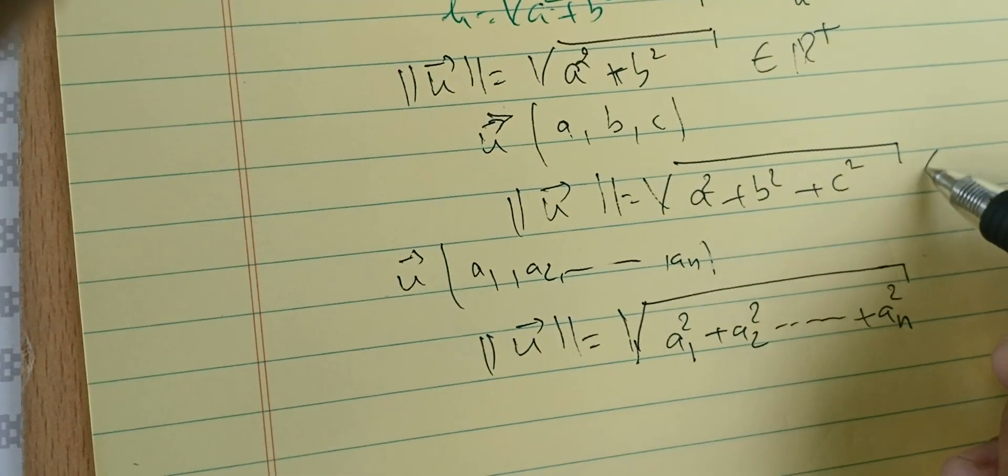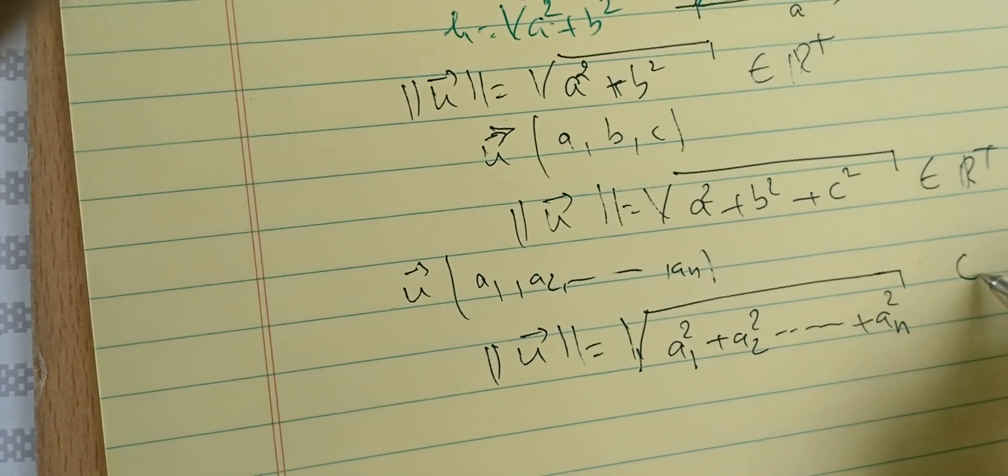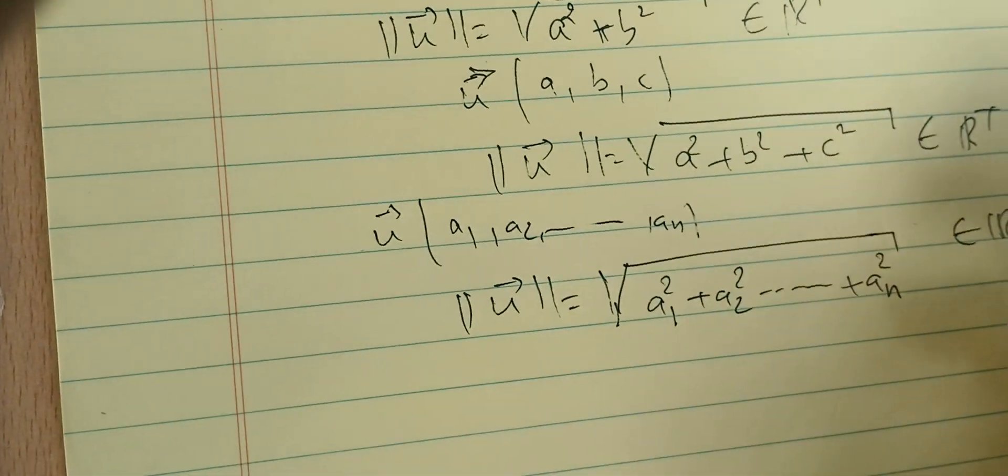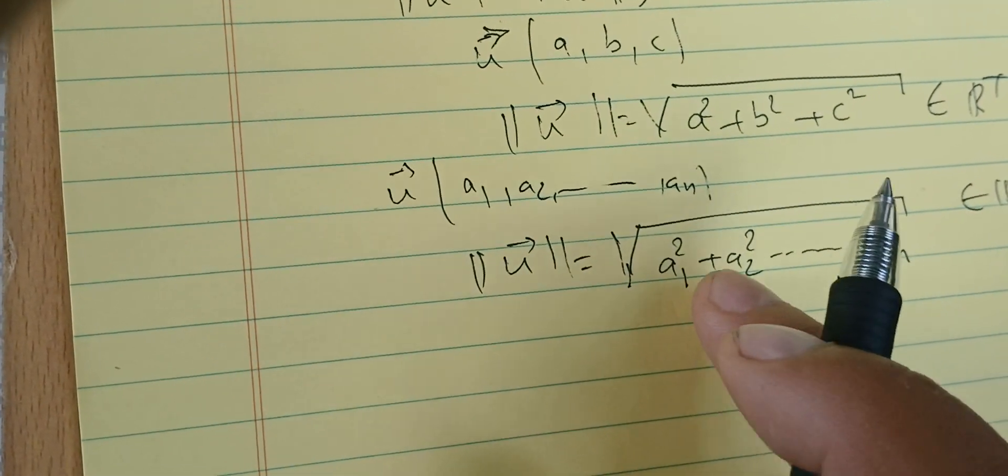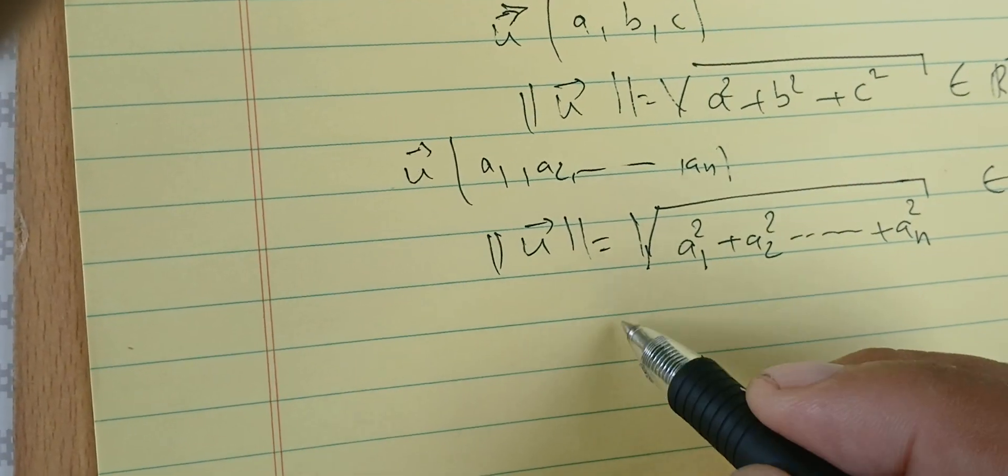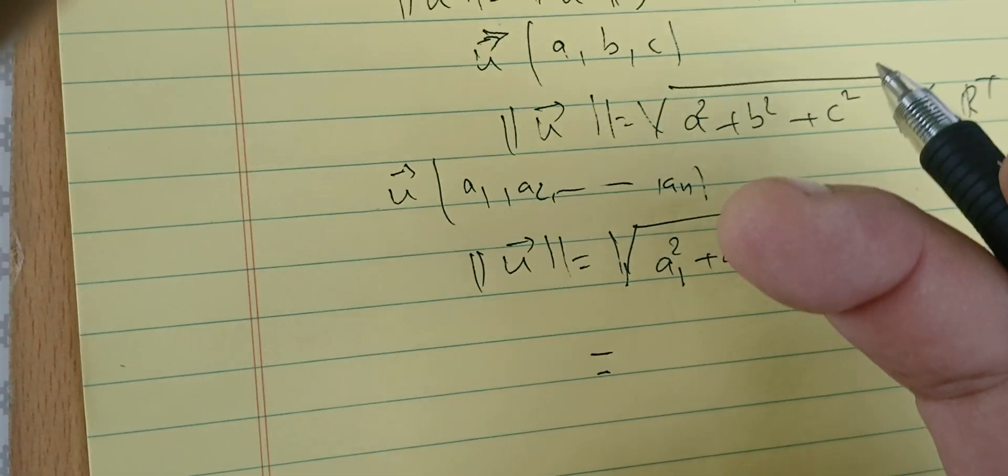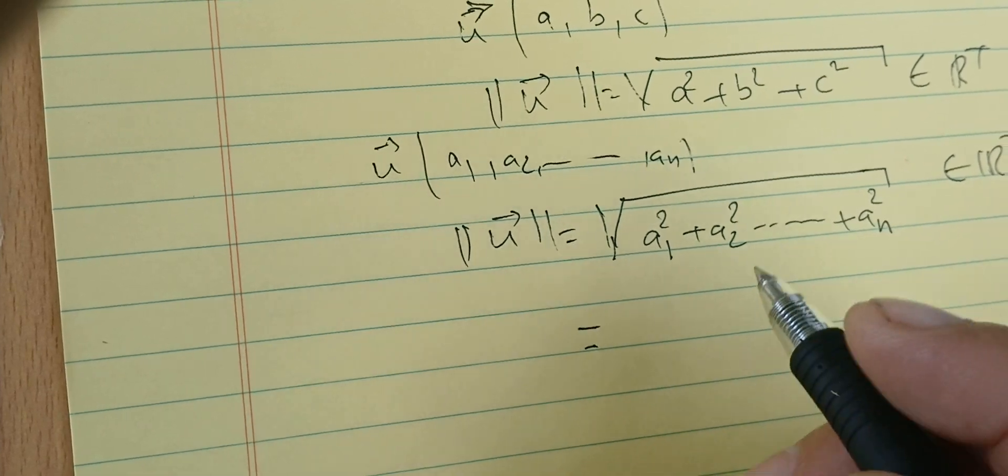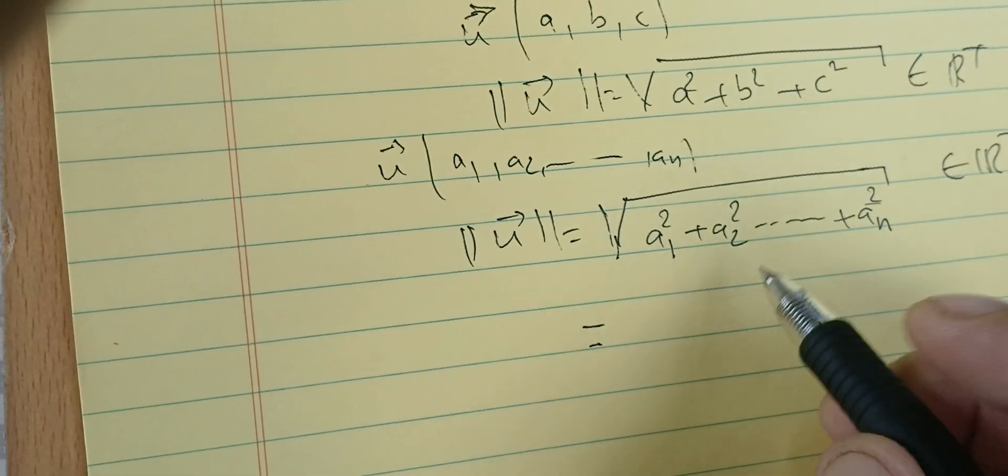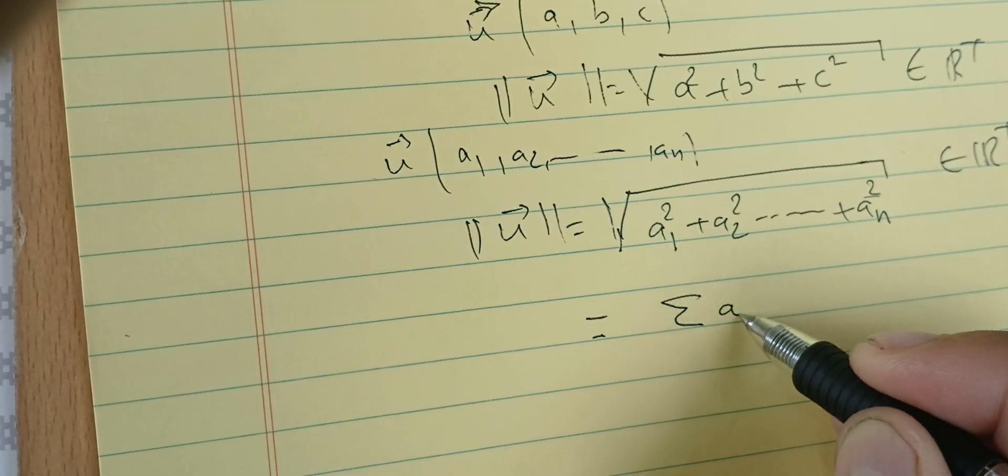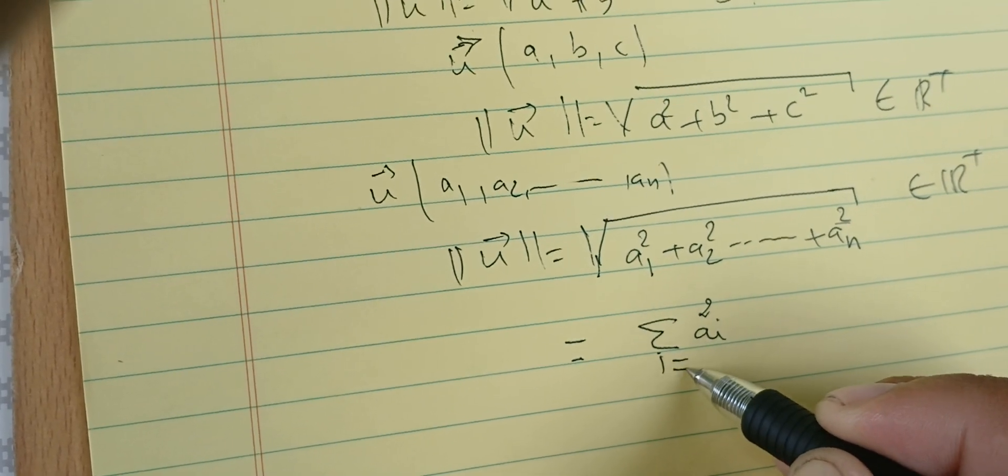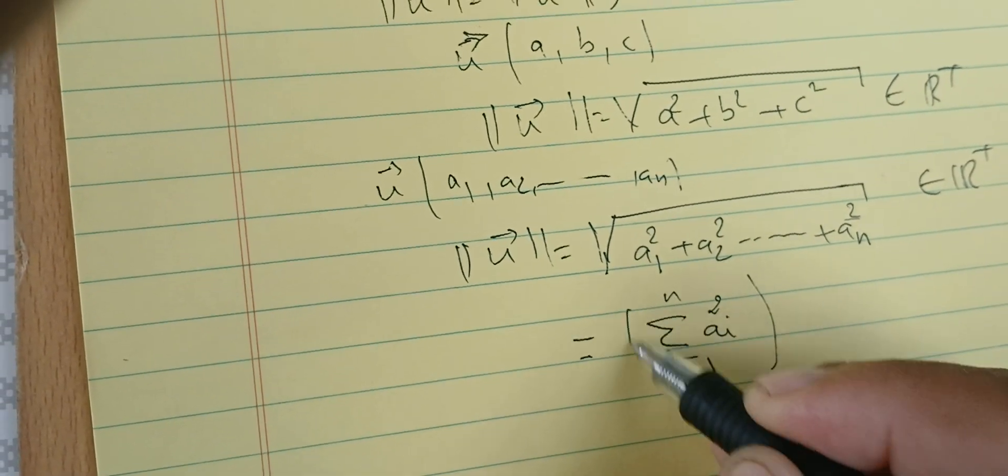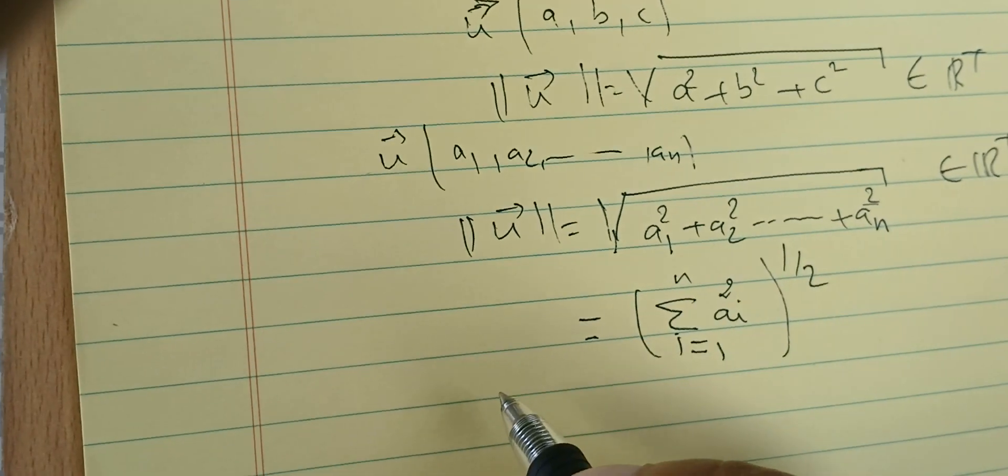Note that these are just numbers. The length of something is always positive. Sometimes we use a compact notation: I can use the sum sigma from i=1 to n of aᵢ², and raise it to the power of one-half. This is the norm of u.